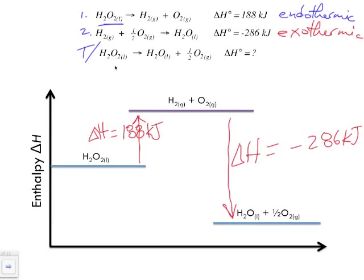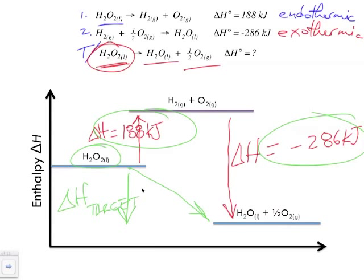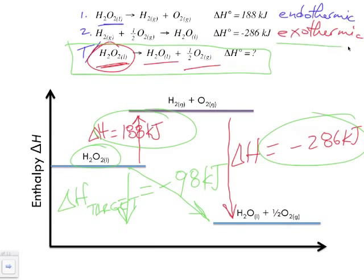Looking at the target equation, we start with hydrogen peroxide and end with water and oxygen. In actuality, the target goes from here down to here. This new change in enthalpy is the sum of the two steps together. Adding them gives a change in enthalpy for our target equal to minus 98 kilojoules. So this overall target equation is exothermic — it's giving off heat — but it's not giving off as much heat directly as the two-step pathway does.